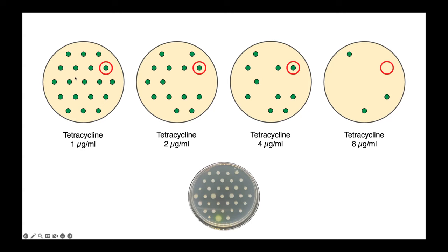So if we start with our very low concentration of tetracycline, one microgram per milliliter, and focus on this colony here, you can see that we have growth on one, two, and four, but not eight micrograms per milliliter of tetracycline. And so in this case, we would have a minimum inhibitory concentration, or MIC, of eight micrograms per milliliter.